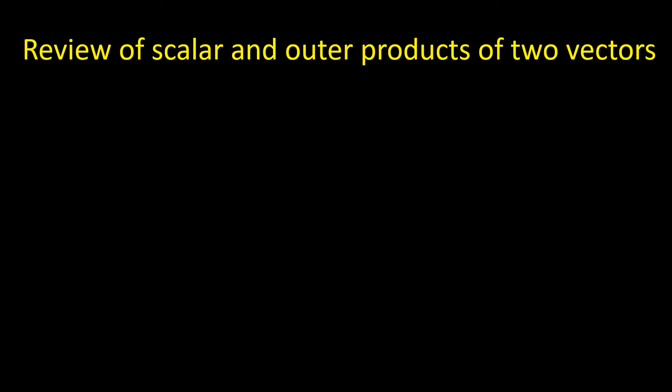Let's review what scalar and outer products of two vectors are. The outer product gives rise to what we call the bivector. So let's draw two vectors here, a and b. To discuss the dot product, the scalar product, I'm going to deal with the dot product of a with b's unit vector.